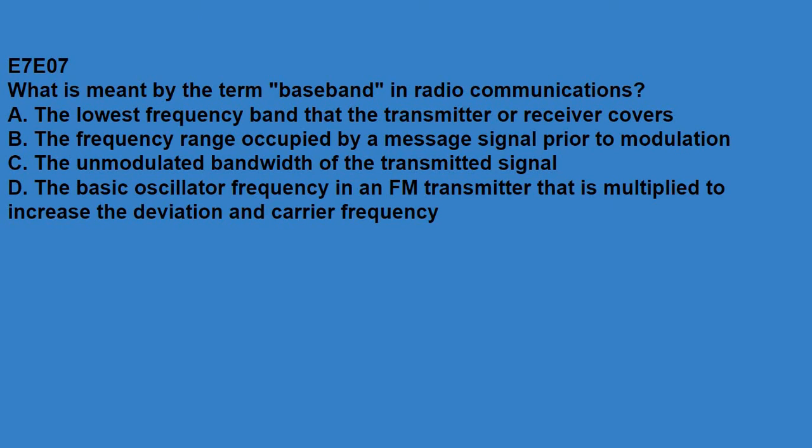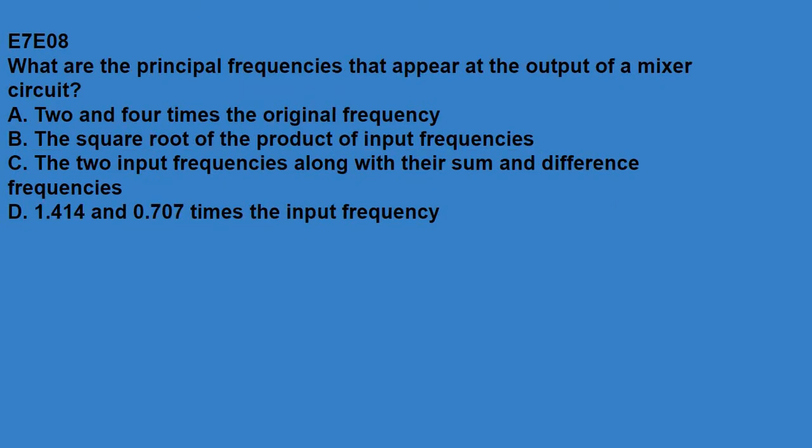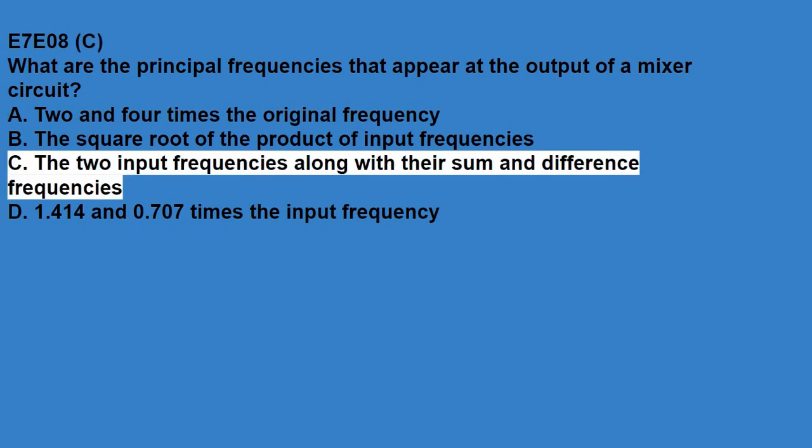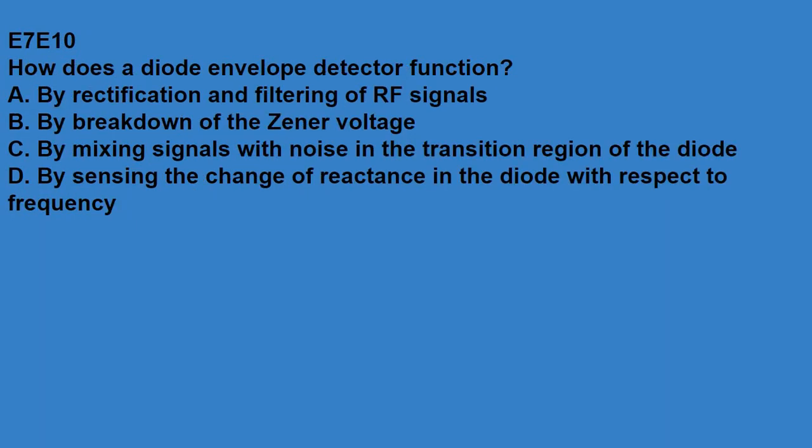E7E07, what is meant by the term baseband in radio communications? The frequency range occupied by a message signal prior to modulation. E7E08, what are the principal frequencies that appear at the output of a mixer circuit? The two input frequencies along with their sum and difference frequencies. E7E09, what occurs when an excessive amount of signal energy reaches a mixer circuit? Spurious mixer products are generated. E7E10, how does a diode envelope detector function? By rectification and filtering of RF signals.